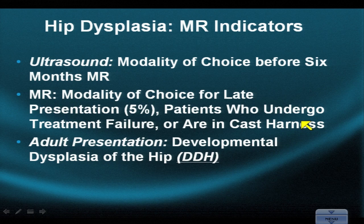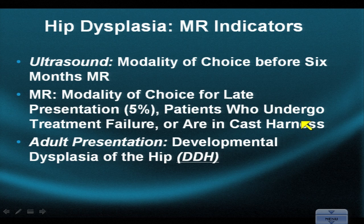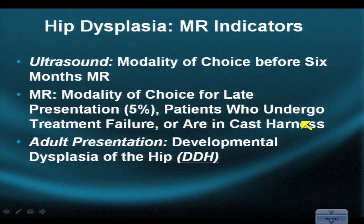Hip dysplasia is something we typically think about in the neonate. The child presents as uncomfortable after several days or weeks in the nursery, is delayed in their ability to ambulate, and eventually gets an ultrasound showing an abnormal relationship between the acetabulum and the femur, or has an abnormal click on physical examination — the so-called Ortolani maneuver. However, individuals who escape detection of hip dysplasia and go on to young adulthood may present as impingers, with many different manifestations.